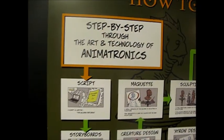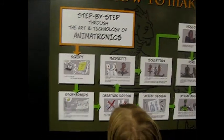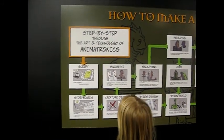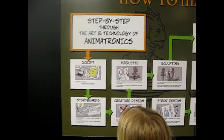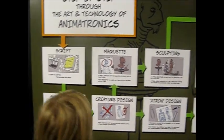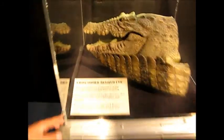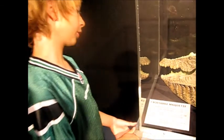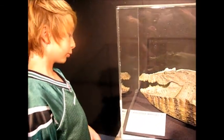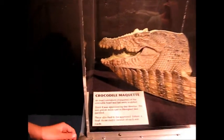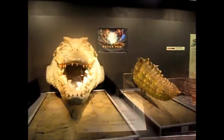Step by step, including the Art and Technology of Animatronics. A script is written, a storyboard is created. An exact miniature maquette of the crocodile head and tail was sculpted. Once it was approved by the director, the two pieces were cast in fiberglass and painted.